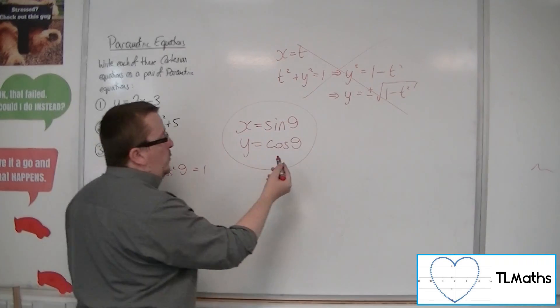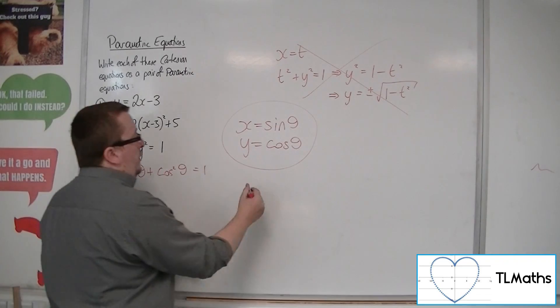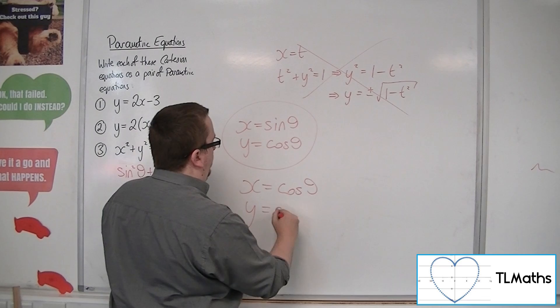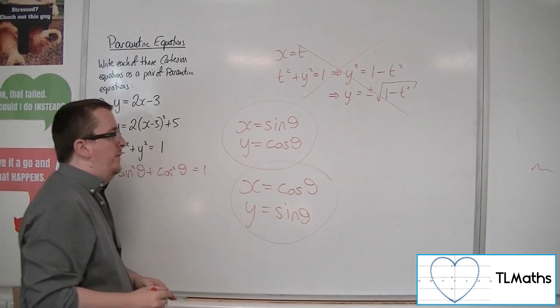And it didn't matter which way round I wrote it because I could have cos squared plus sine squared is 1. So x could be cos theta and y equals sine theta. Both of these are equivalent.